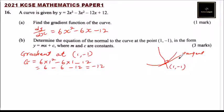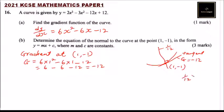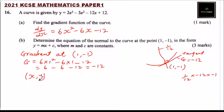Since the gradient of the tangent is -12, the gradient of the normal must be 1/12, because (1/12) × (-12) = -1. For two perpendicular lines, the product of their gradients equals -1. So if we take a general point (x, y) and the known point (1, -1), the gradient of the normal is 1/12.